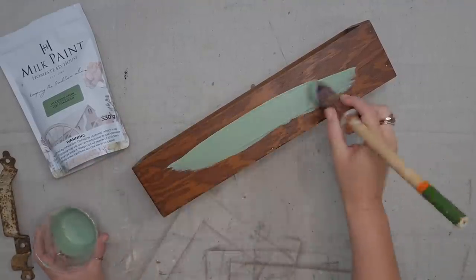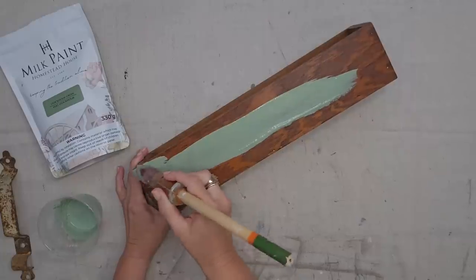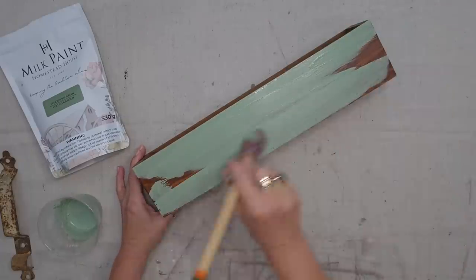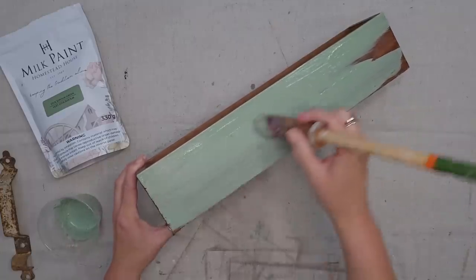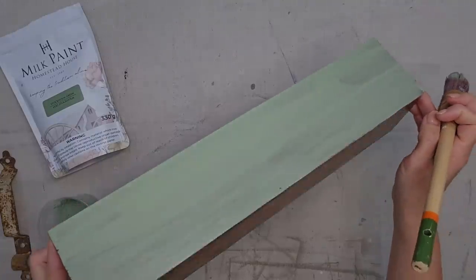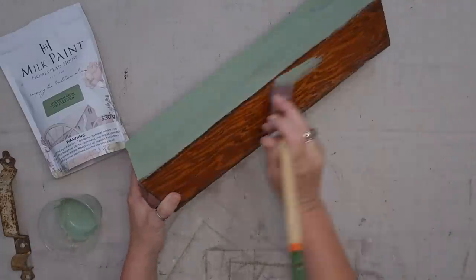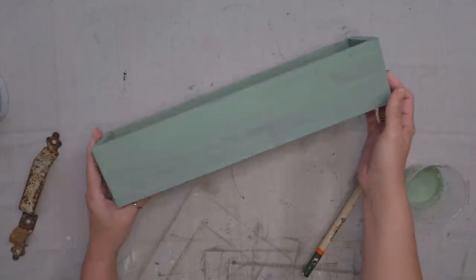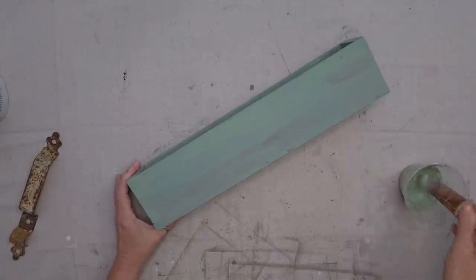And then you just stir it up. My paint is all mixed up and you just paint your piece like you would with any other paint. And usually with milk paint, when I want full coverage, it takes about two coats of paint. But as you can see, the coverage is really good and this is a beautiful color. It also paints really quickly.